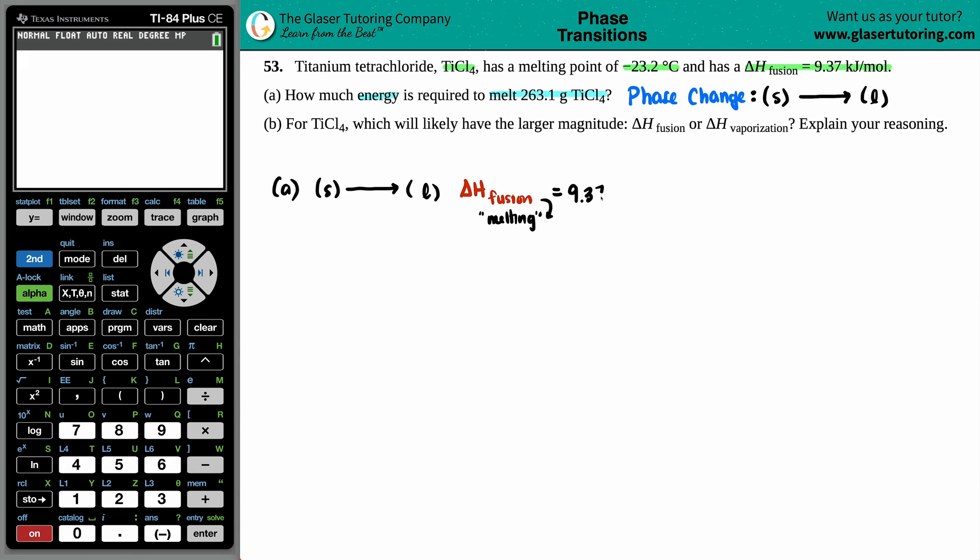So 9.37 kilojoules per mole for TiCl4. But now, what formula do we use with phase changes, especially if we want to find out how much energy there is? The formula is Q, which is the amount of heat energy, equals N times the delta H of fusion. So this is the enthalpy of fusion, which is basically just saying how much heat does it require to melt one mole of TiCl4. We know this number already, 9.37 kilojoules per mole. But what is the N value?